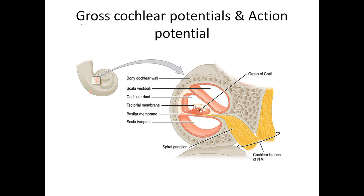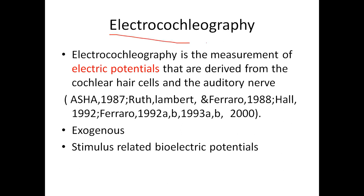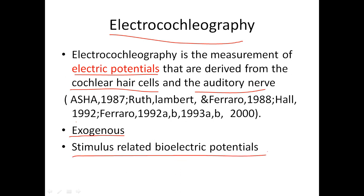Moving on to the potentials — gross cochlear potential and action potential. These two we are going to record. The action potential is from the nerve. Electrocochleography is a measurement of electric potential derived from the cochlear hair cells and the auditory nerve. This electric potential will generate only if there is a sound stimulus — only with an external stimulus. We call it exogenous; that is why we say it is a stimulus-related bioelectric potential.